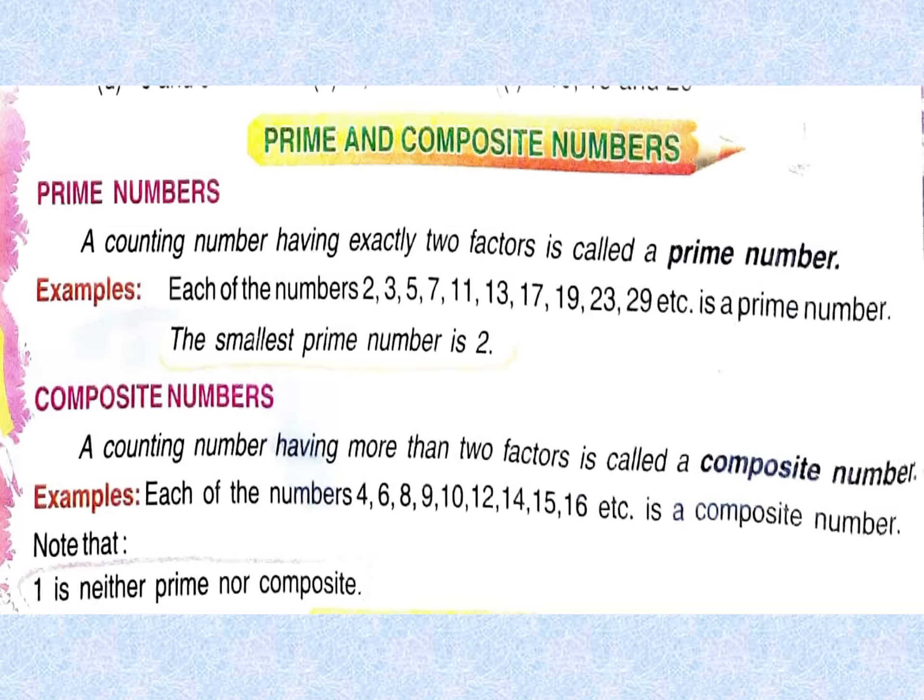A counting number having more than two factors is called a composite number. For example, each of the numbers 4, 6, 8, 9, 10, 12, 14, 15, 16, etc. is a composite number. And 1 is neither prime nor composite.